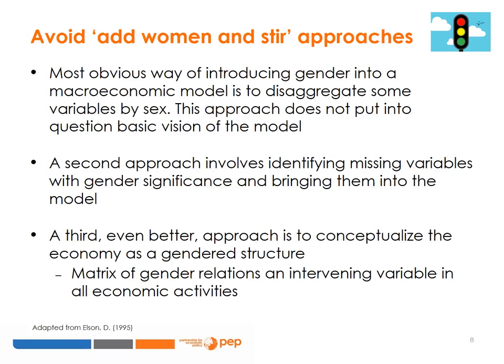A second, better approach would involve, in addition to disaggregating standard variables by sex, identifying missing variables with gender significance and bringing them into the model. For instance, one could add an unpaid care sector as a constant or resource to a model originally including only market sectors. A third, and even better approach, is to conceptualise the economy as a gendered structure, meaning that the matrix of gender relations becomes an intervening variable in all economic activities and affects the functioning of the market economy from within. Under this approach, different configurations of gender relations are reflected in different sets of model parameters.